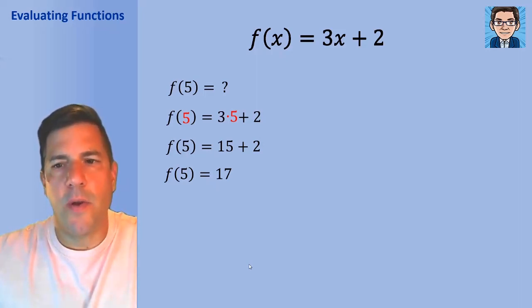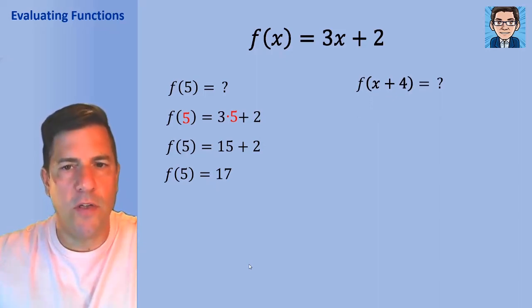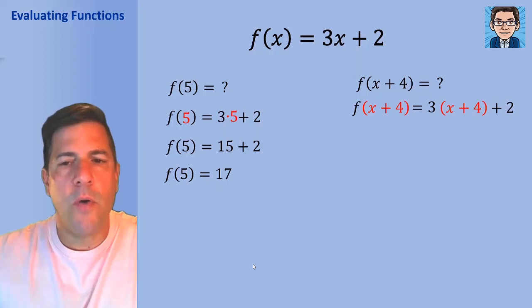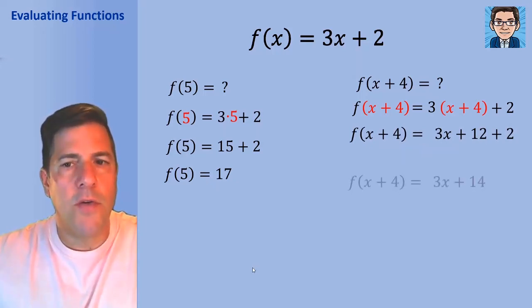We can also evaluate a function using an expression. Rather than putting a number into a function, we can put an expression in. So if we wanted to calculate f of x plus 4, we would put x plus 4 into the function for x. Notice I put parentheses around it—it's usually best to do that because the whole x plus 4 takes the place of x. We'll have to multiply the 3 by the x and by the 4 using distribution. That gets us 3x plus 12 plus 2, which simplifies to 3x plus 14.